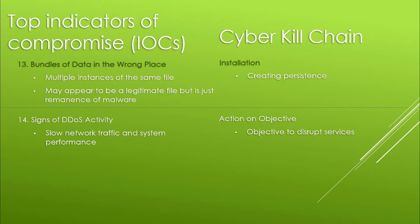And the last one: signs of DDoS activity. This includes slowed network traffic and system performance, abnormally active process usage, or anything that disrupts performance. A DDoS attack can also be a sign of a more serious attack while the security team is dealing with the DDoS itself. This would be considered actions on objective, specifically if the threat actor wants to slow the network down.